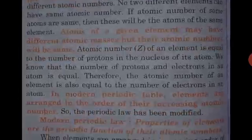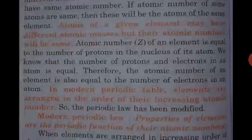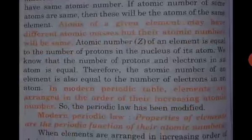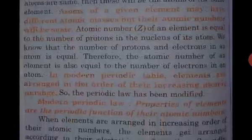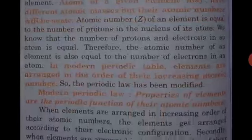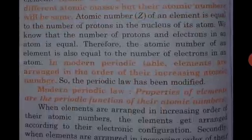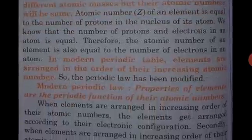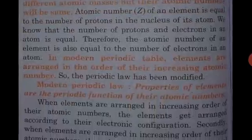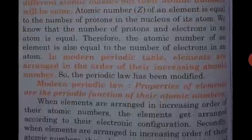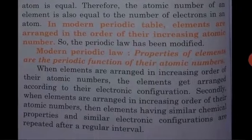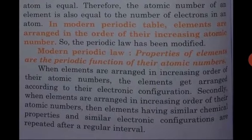Scientists observed that many of the defects of Mendeleev's original table can be removed by rearranging elements on the basis of atomic number. This led Moseley to change the basis of classification of elements from atomic weight to atomic number. So the modern periodic law is given by Moseley.